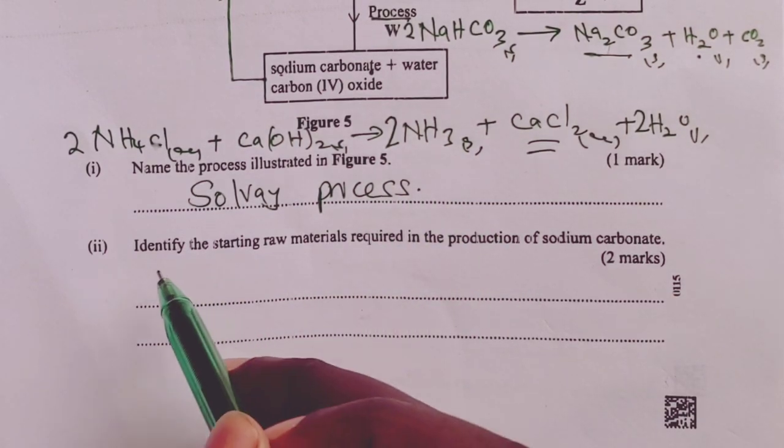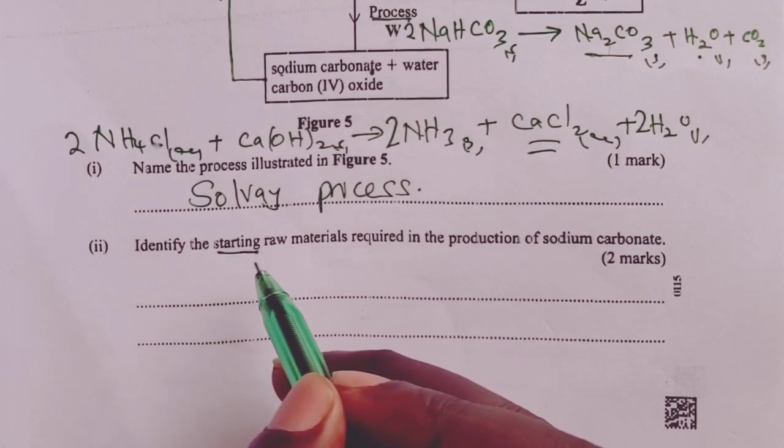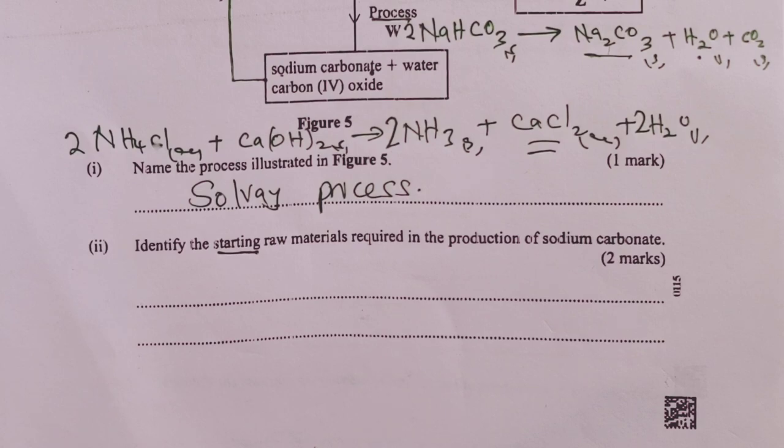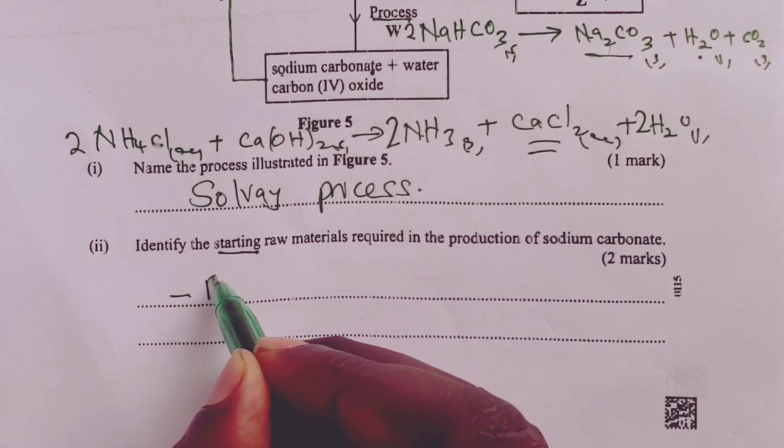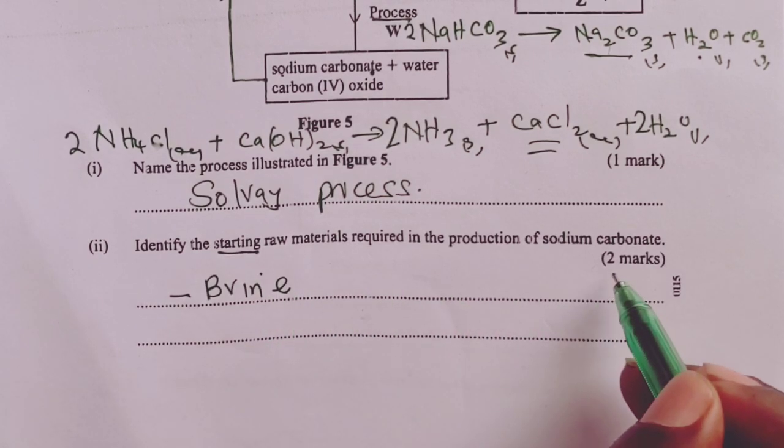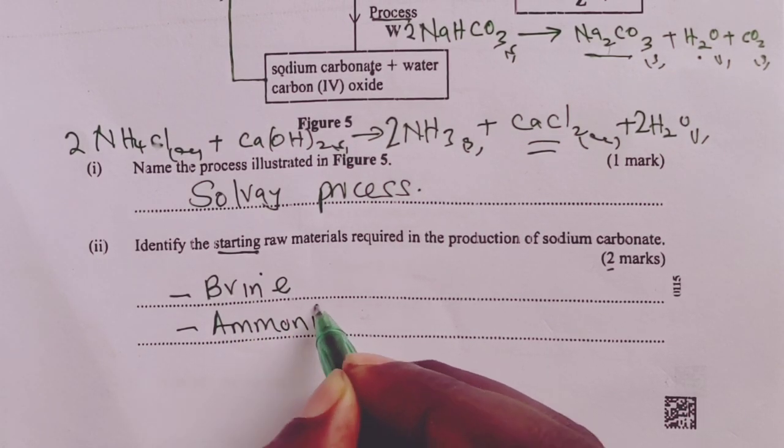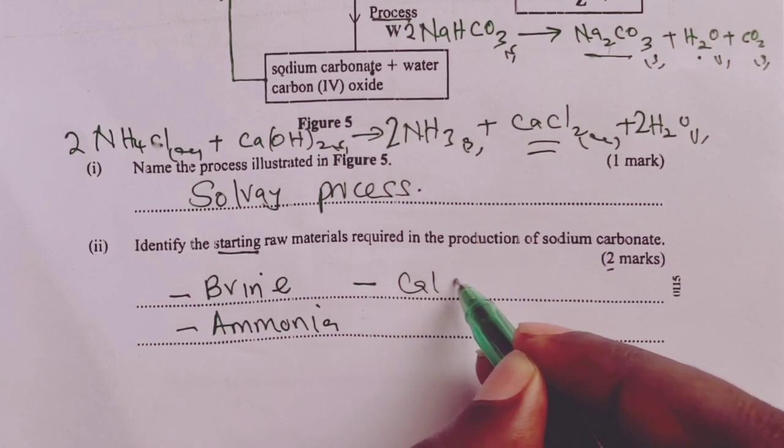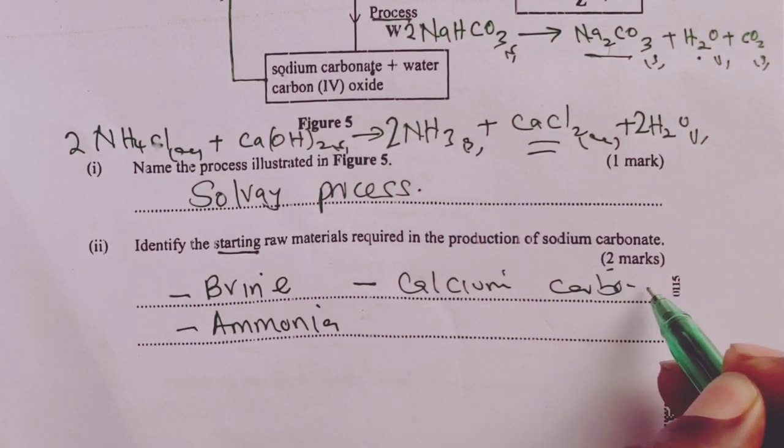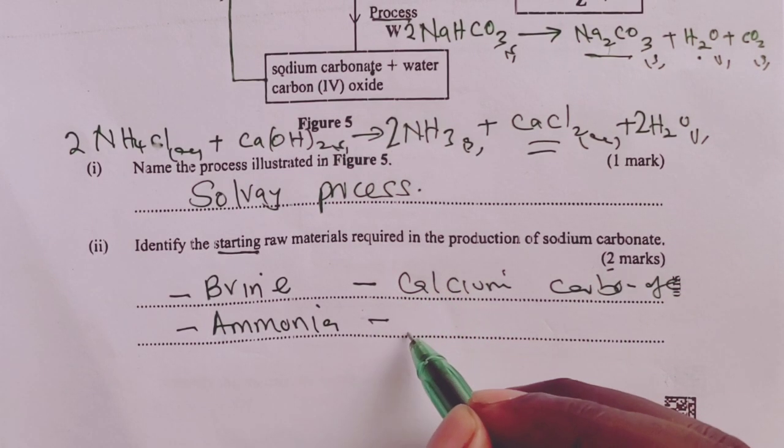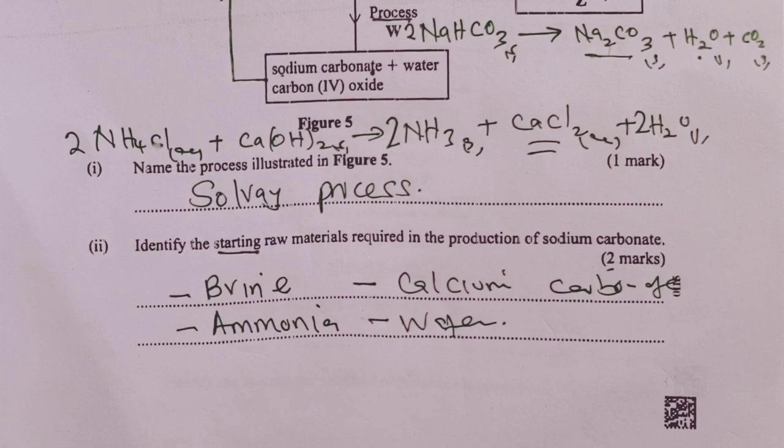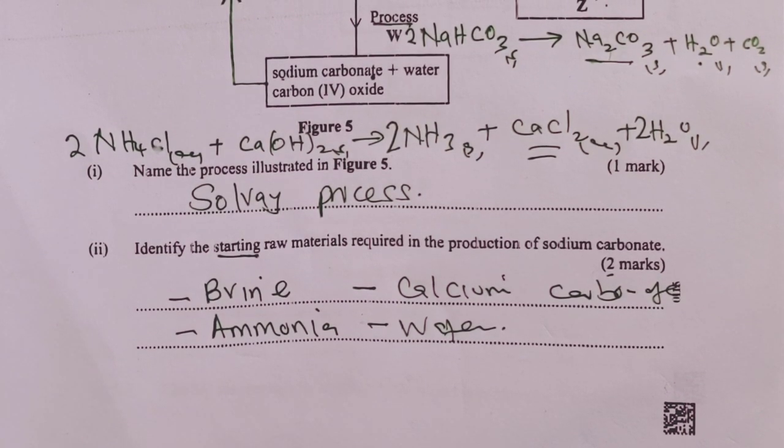Next, we were asked to identify the starting raw materials. The word underlined here is starting. So the examiner allowed brine. Because it was 2 marks, we were expected to mention 4. There is ammonia as a starting raw material. We have calcium carbonate, and we have water. Carbon 4 oxide is not a starting material or raw material because we get it from calcium carbonate. Any of those 4 for half mark, giving us the 2 marks for that part.